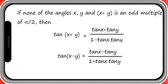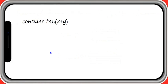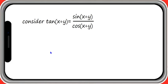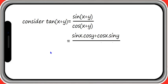Now let us derive tan of x plus y. You know the definition of tan x: tan x is sin x divided by cos x. Therefore, tan of x plus y is equal to sin of x plus y divided by cos of x plus y. We have already derived the formulae for sin of x plus y and cos of x plus y. Substituting those values, this is equal to sin x cos y plus cos x sin y, divided by cos x cos y minus sin x sin y.